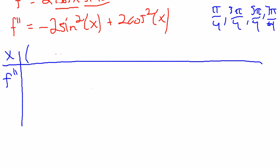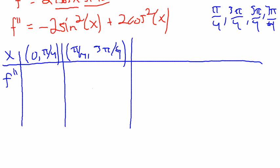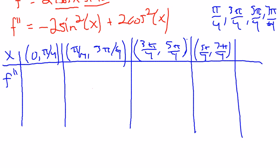So I'm going to start by writing all of my intervals. I go from 0 to π over 4, I go from π over 4 to 3π over 4, I go from 3π over 4 to 5π over 4, I go from 5π over 4, I'm going to run out of space, to 7π over 4. And then my last one is 7π over 4 to 2π. And remember that was kind of the end of my interval, 0 and 2π.